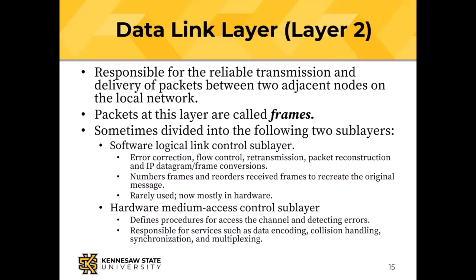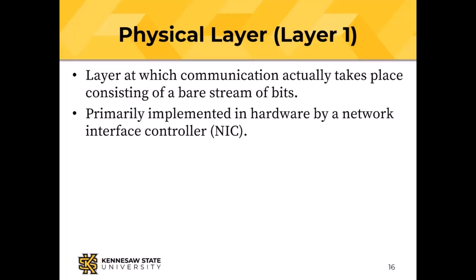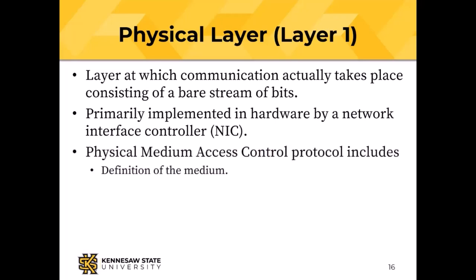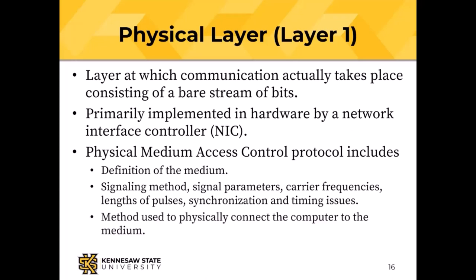The physical layer is actually the connection: the wire, the radio channel, the fiber optic cable — primarily implemented in hardware in the network interface controller. The medium access control protocol defines the medium, so there's a different protocol for cellular radio data than for Ethernet, but the upper layer protocols don't have to care. It defines the signaling mechanism — carrier frequencies, pulses, synchronization, timing — and the method that physically connects the computer to the transmission medium. That is why you can buy an Ethernet cable and it fits the socket: all of that stuff has been standardized.